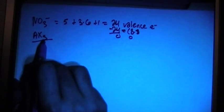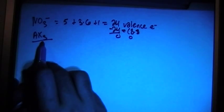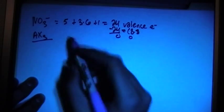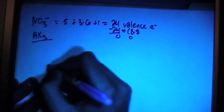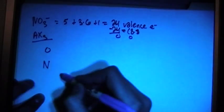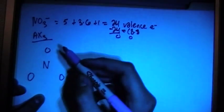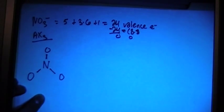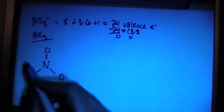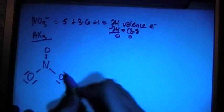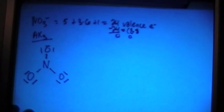That means you're going to have 3 atoms attached to the center atom and no non-bonding pairs. So we have the nitrogen and 3 oxygens. We can go ahead and connect them all with a single bond, just to start off.